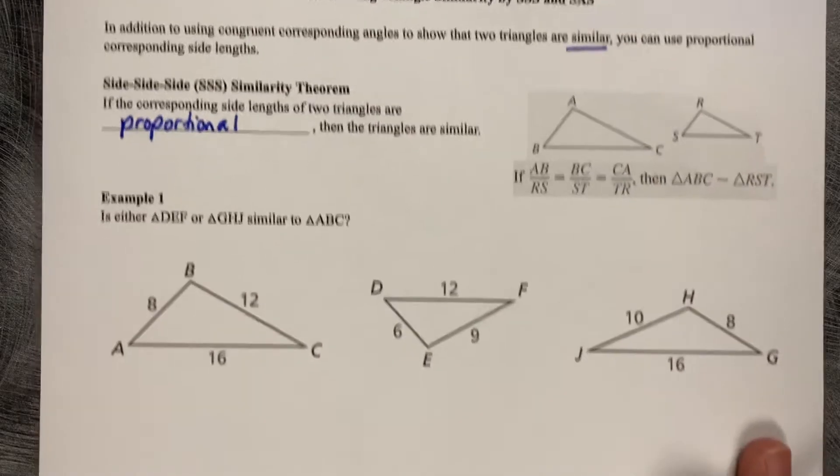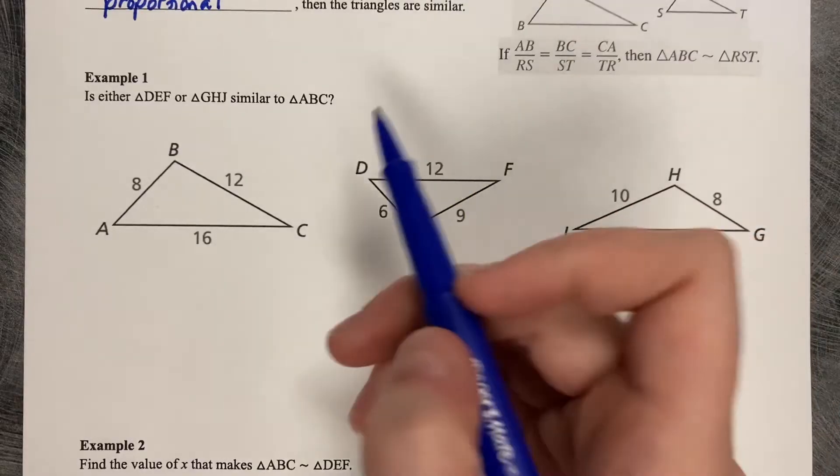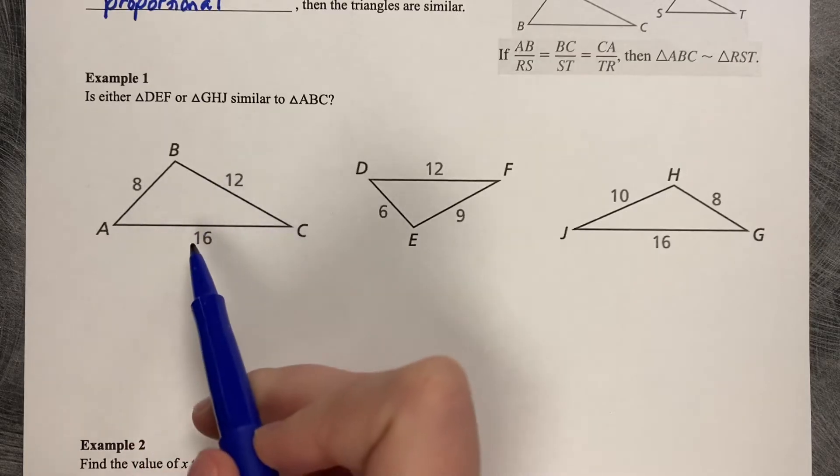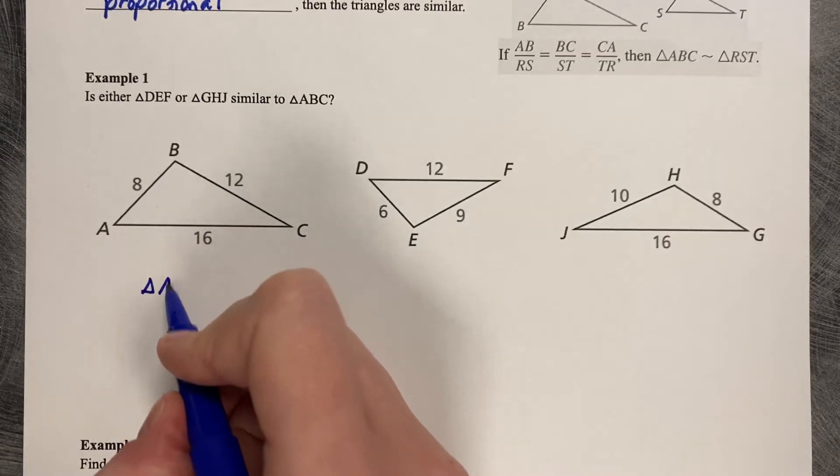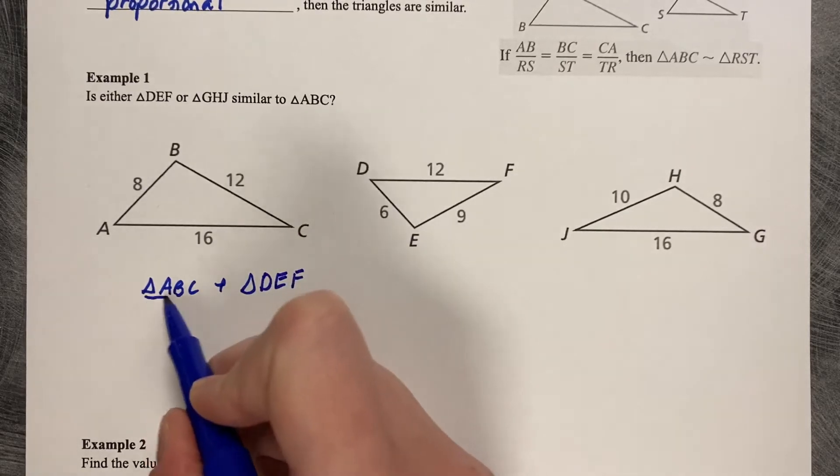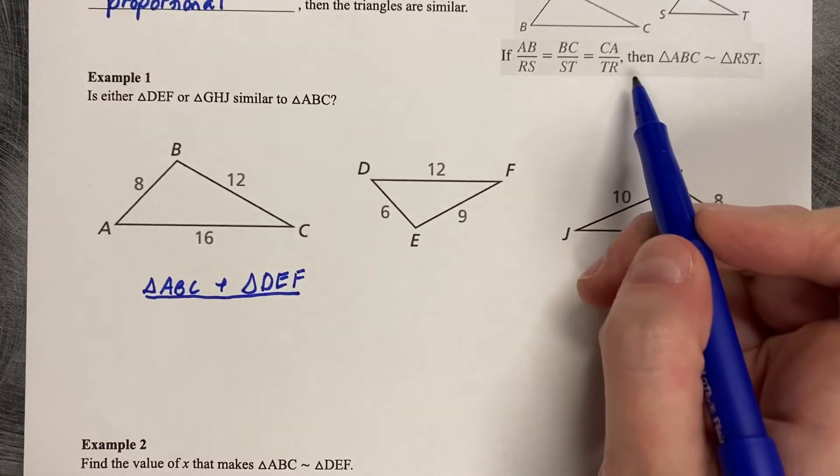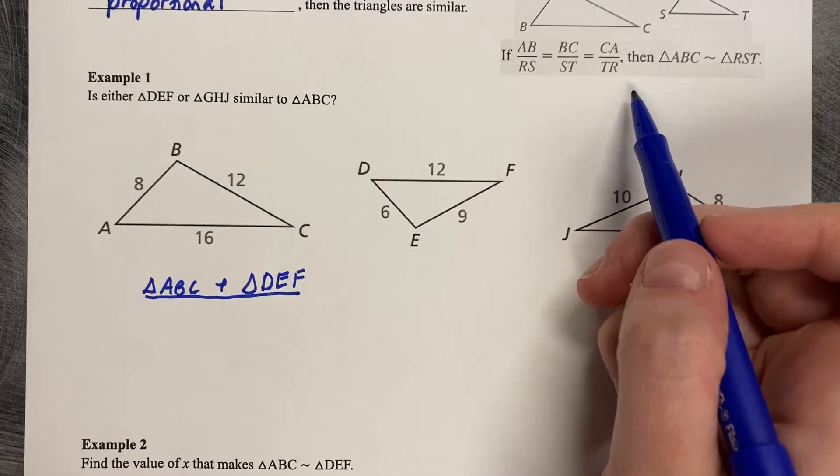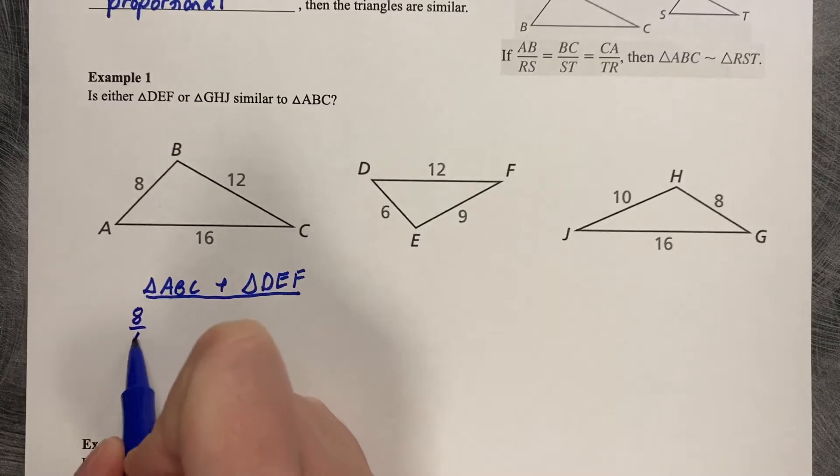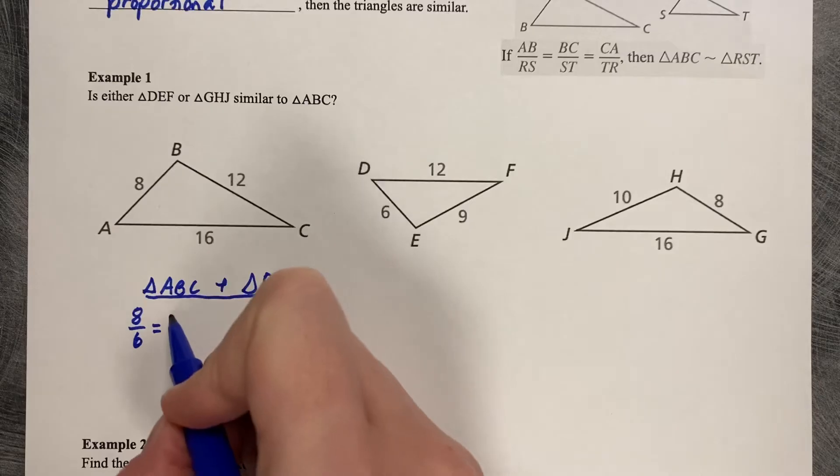So let's try this on Example 1. Is either triangle DEF or GHJ similar to ABC? We're going to compare to ABC, this larger triangle on the left. So first let's do triangle ABC and DEF. We're testing to see if these fractions are equal. So let's do 8 compared to 6, and then you reduce the fractions. So 8 to 6, so 4 thirds.